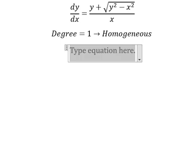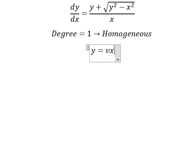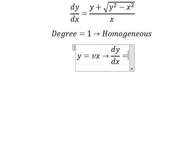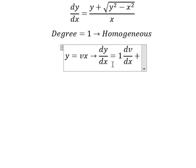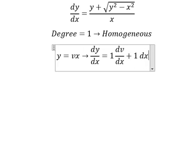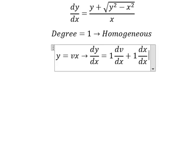I will put y equals vx. Later we need to do first derivative for both sides. This one we have number one dv over dx, this one we have number one dx over dx, and we have v.